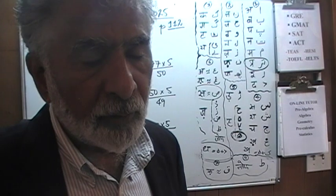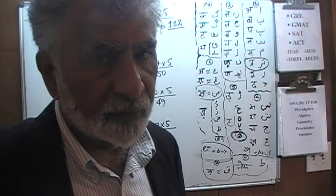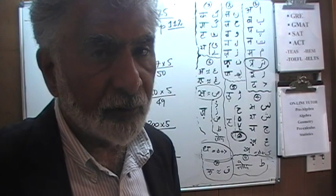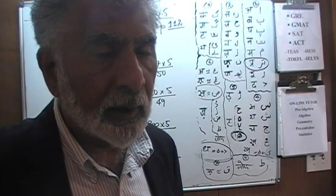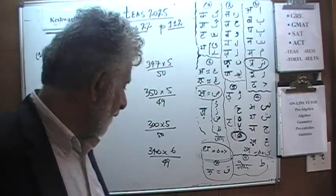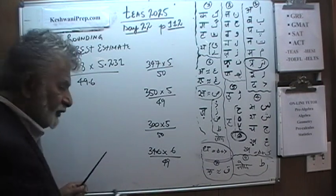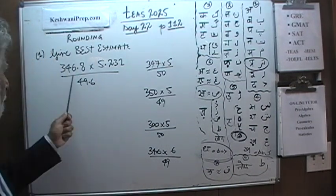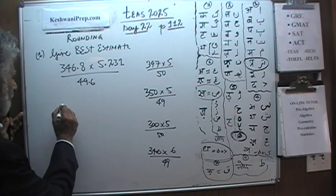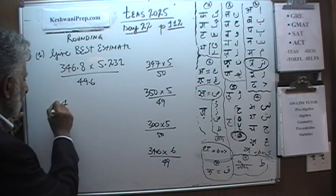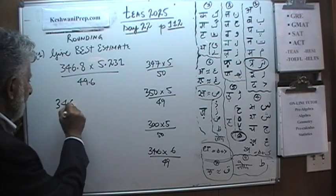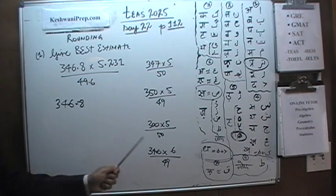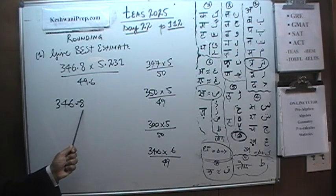We have to understand why the correct answer is correct, but even more importantly we have to understand why the wrong answers are wrong. So let's start with the answer choices. For 346.8, what did they do here? Well, they just dropped the 0.8 for no reason.